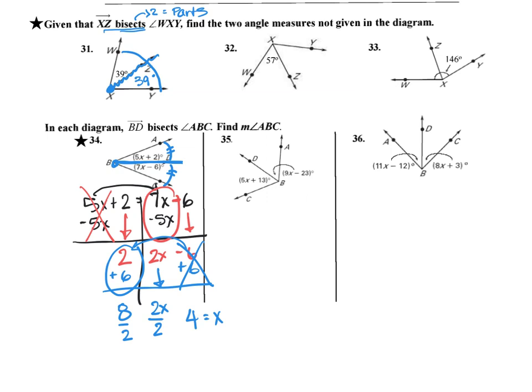The question says, find the measure of ABC. If I look back in at the problem, A to B to C is the whole angle. And I know the two parts are equal to each other.